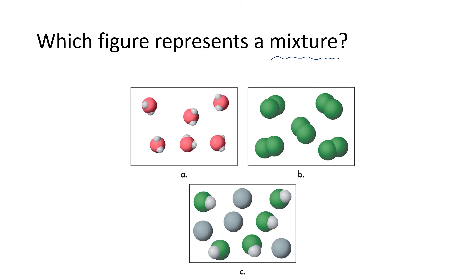Well, we know that answer B is an element. And we know that answer A is a compound. Answer C is actually a mixture of an element, which are the gray or silver colored spheres, and a compound, which is the one formed by the green and the white spheres. So answer C is going to be a mixture.